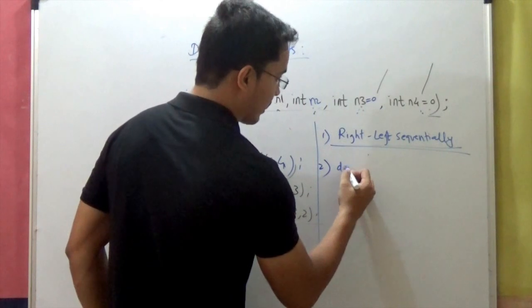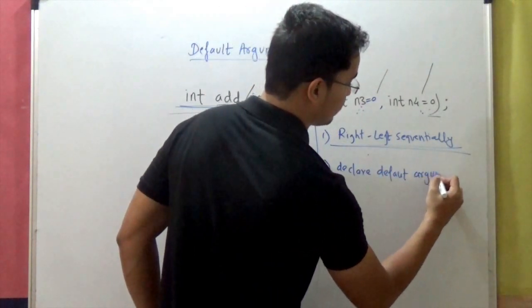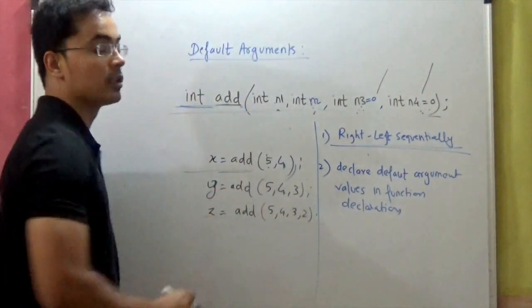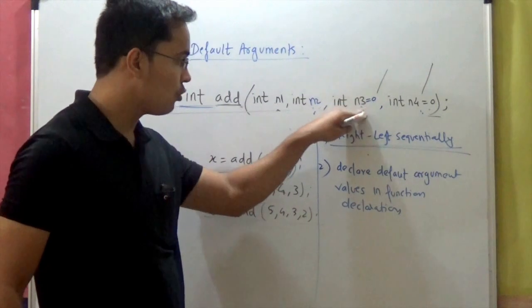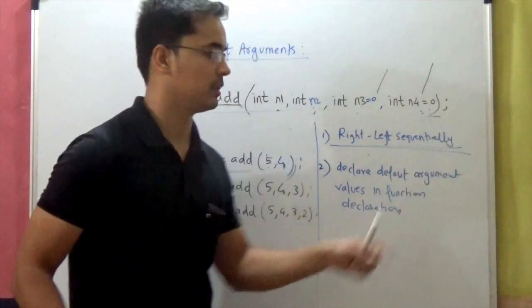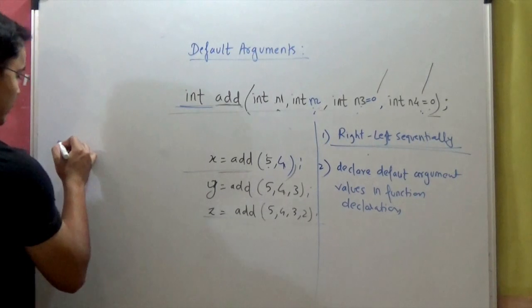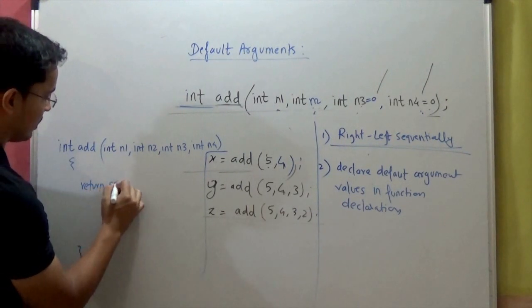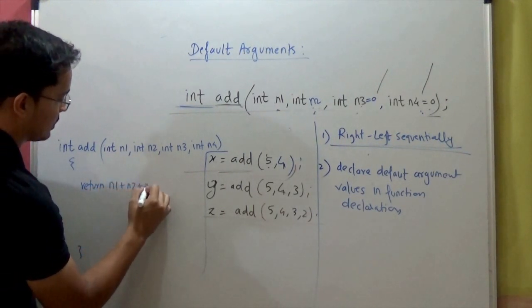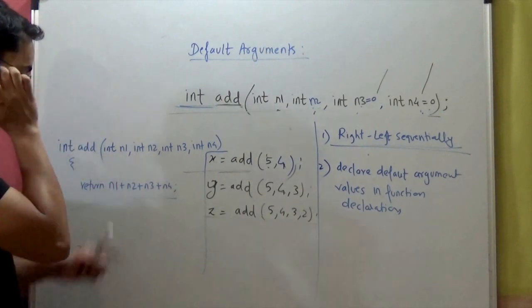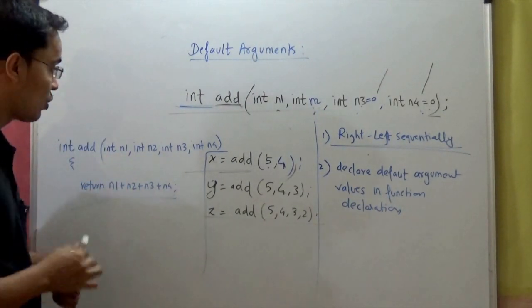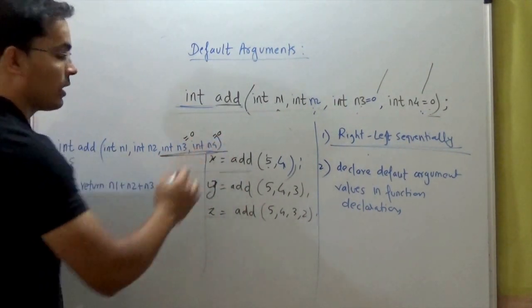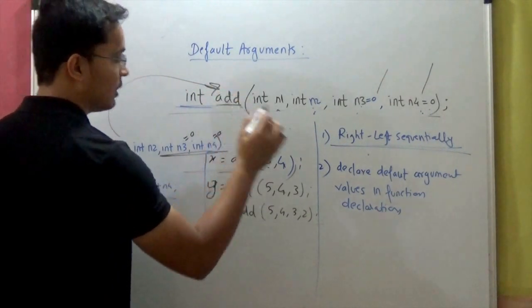You have to declare default argument values in your function declaration — it cannot be done in your function definition. You make this specification while declaring your function, not when you are actually defining it. The function definition will look like this: return n1 plus n2 plus n3 plus n4. In the function definition you cannot assign default values like n3 equal to 0 — you have to do that in your function declaration.